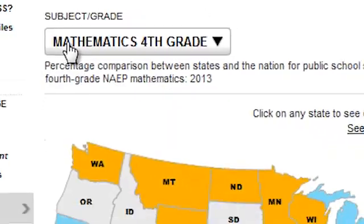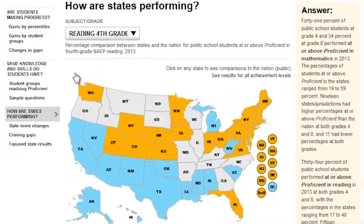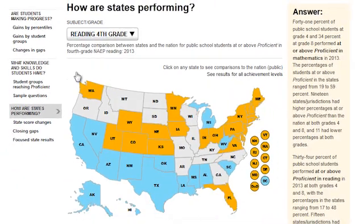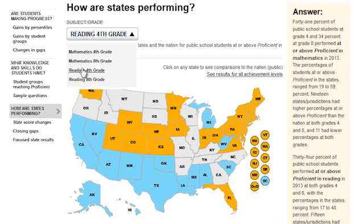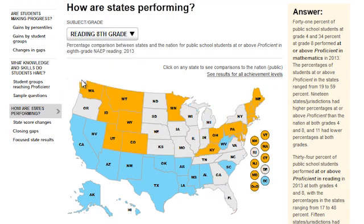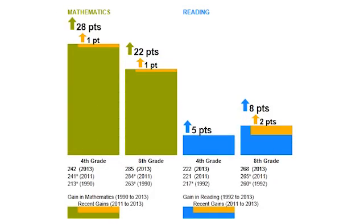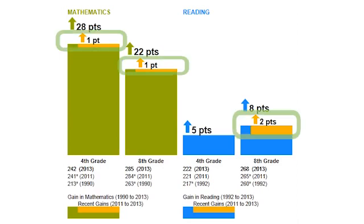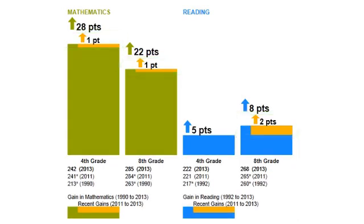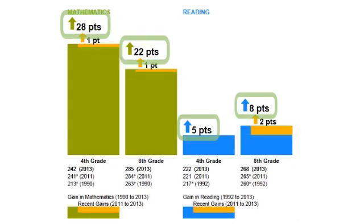It also allows you to answer questions of your own, including, for example, how did fourth and eighth graders perform in reading across the states? You'll have better access than ever to data. With new graphics and charts, you can visualize student progress from 2011 to 2013 and from the past two decades.